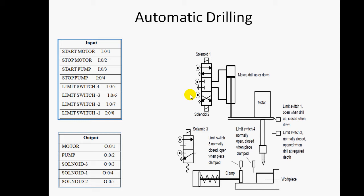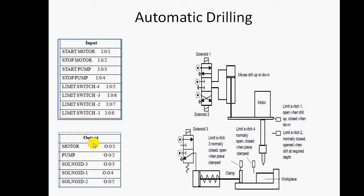We now divide the input and output ports for preparing the PLC ladder diagram. All switches and sensors are considered as input ports — the start button, stop button of the motor, start pump, stop pump, and the four limit switches are all input ports. For output ports, all three solenoid valves are output ports, and the motor and pump are also output ports.